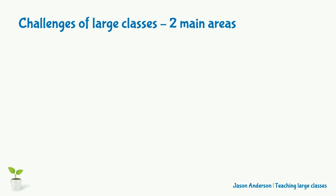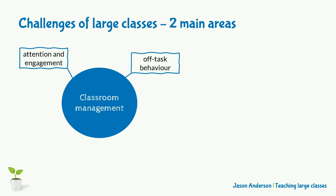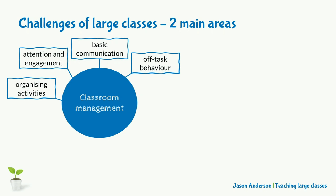The first falls under the scope of what is often called classroom management and includes ensuring that learners remain focused on our intended activities and outcomes, as well as the higher likelihood of off-task and disruptive behaviour. If we want to do a more complex activity or move learners about, this often takes more time, more planning, and more effort than in smaller classes. Even simple aspects of communication can become challenging, such as being heard above the ambient noise or writing on the board largely and clearly enough for all to see.